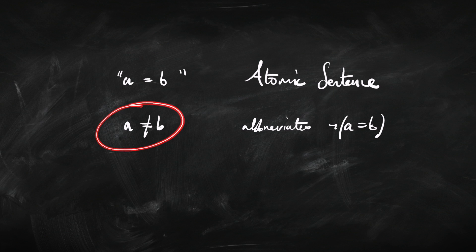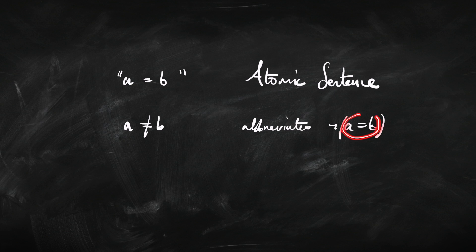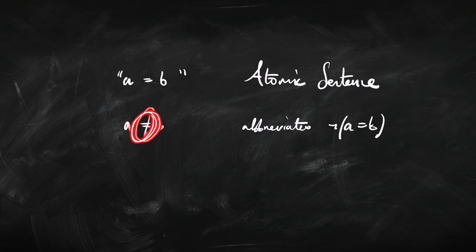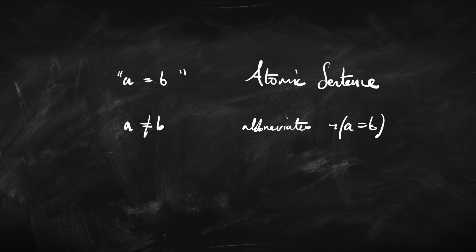We're also going to see sentences like A is not identical to B, written with a crossed-out identity symbol. If we wrote that out longhand, we'd write A is identical to B and then negate it — just putting a negation symbol in front. We have to be careful here: this is not a new symbol, it's just an abbreviation. So the negated form is not an atomic sentence; it's an atomic sentence with a negation symbol in front of it, just written a different way.